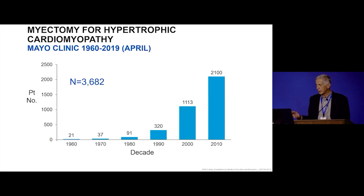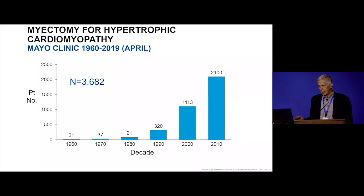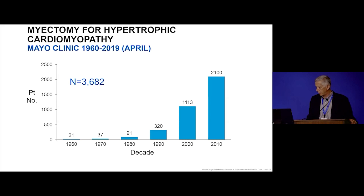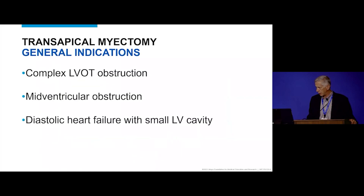Hypertrophic cardiomyopathy is a common group of patients that we see for surgery. Through April of 2019, we had done over 3,600 operations of one sort or another. If you include all the patients done during the pandemic year, we've now operated on more than 4,000 patients with hypertrophic cardiomyopathy.